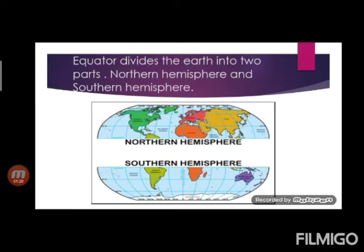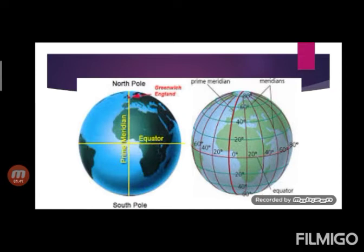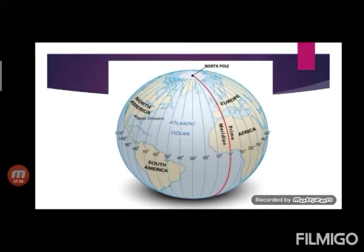As we have discussed about the equator, that it divides the Earth into two parts, that is Northern Hemisphere and Southern Hemisphere. Likewise, there is North Pole and South Pole and there is a line which joins North Pole to South Pole. That line is taken as 0 degree and is known as Prime Meridian and behind it, there is a line that is called as 180 degree longitude. Basically, Prime Meridian is a semi-circle that joins North Pole to South Pole.